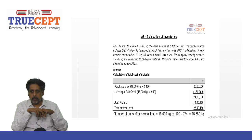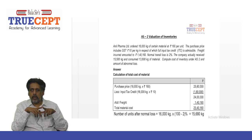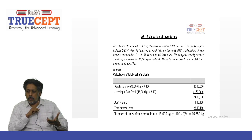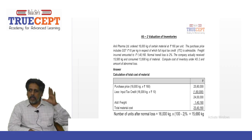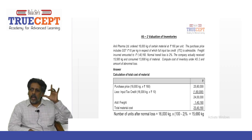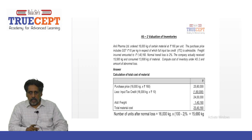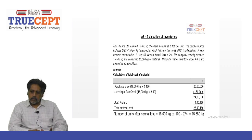The purchase price includes GST rupees 10 per kg, in respect of which full input tax credit (ITC) is admissible. So the purchase price is rupees 160 per kilogram, which includes rupees 10 per kg GST, and you can enjoy a credit of rupees 10 — input tax credit is available. Freight incurred amounted to rupees 1,40,160. Normal transit loss: 2 percent.